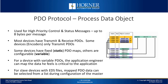Now we'll discuss the PDO or Process Data Object Protocol. It's used for high priority control and status information with up to 8 bytes per message. Most devices both transmit and receive PDOs. Some devices, such as encoders, only transmit PDOs. Some devices have fixed or static PDO maps while others are configurable or variable. For a device with configurable PDOs, the application engineer can map the data they feel is critical to the application. For slave devices with EDS files, mapped PDO data can be selected from a list during configuration of the master.